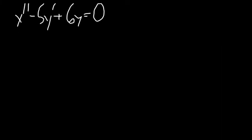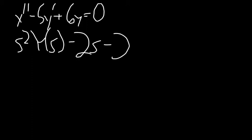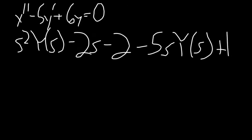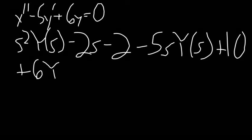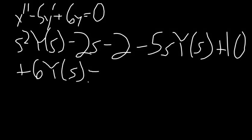Next we substitute in everything that we solved for previously. So the equation becomes s squared Y(s) minus 2s minus 2 minus 5sY(s) plus 10 plus 6Y(s) equals 0.